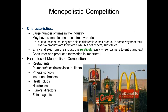The next one is usually the most difficult for students to understand, and that is monopolistic competition. A market in monopolistic competition means there's a large number of firms in the industry. They might have some control over price — they might be able to raise or lower their price a little bit — and that's because their products are somewhat different. They're close, but they're not exact. Entry and exit into the industry is relatively easy, but it does take a little bit of capital to get in there.